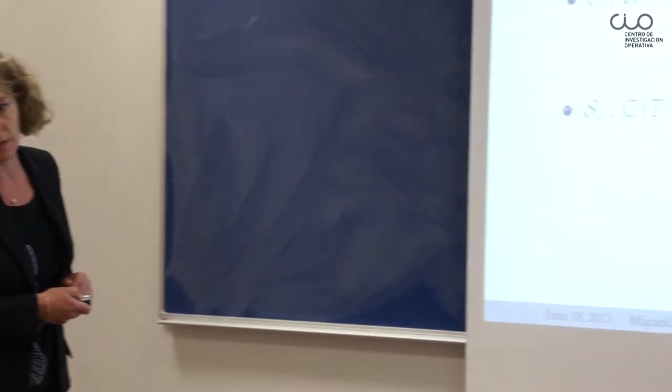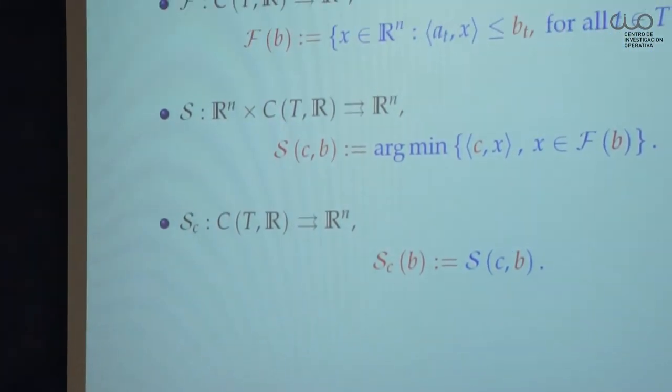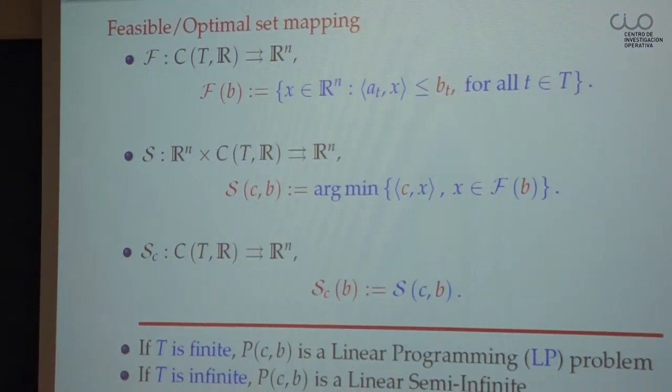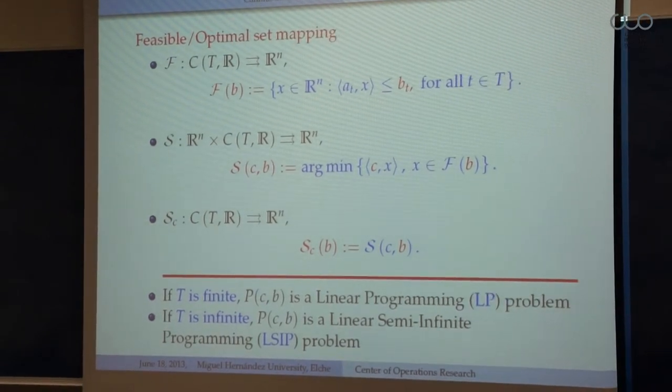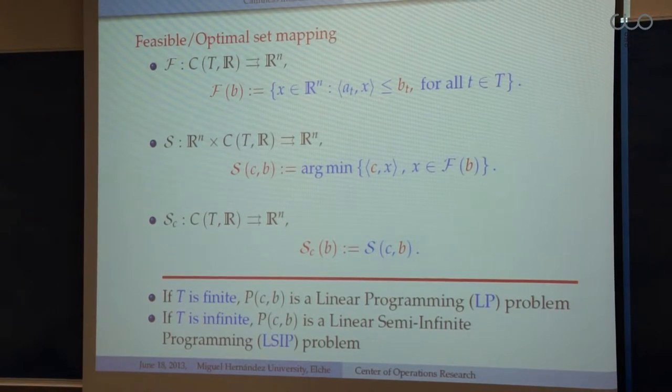We consider three underlying mappings associated to our parametrized problem. The first, capital F, is the feasible set mapping depending on the right-hand side only — it assigns to each b the set of solutions of the corresponding system. Capital S, the optimal set mapping, assigns to each pair (c, b) the set of optimal solutions. Finally, we consider a partial solution mapping where c is fixed, assigning to each b the set of solutions with c fixed. When T is finite, our problem is an ordinary linear programming problem; when T is infinite, it is a linear semi-infinite optimization problem.